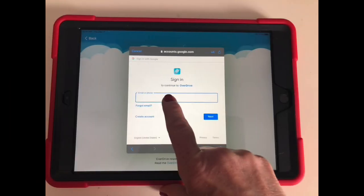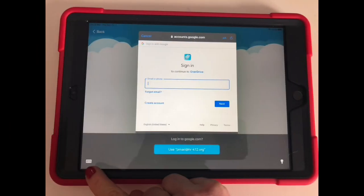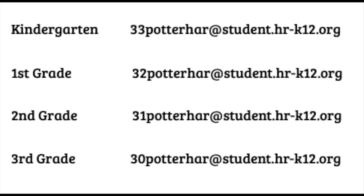Next, type in your student's Google account. Every student at Norris has been set up with a Google account, and this will probably look familiar to you if you have older students in the school. The accounts are set up by year of high school graduation. For kindergarten, that would be 2033. For first grade, 2032. For second grade, 2031. And for third grade, 2030.